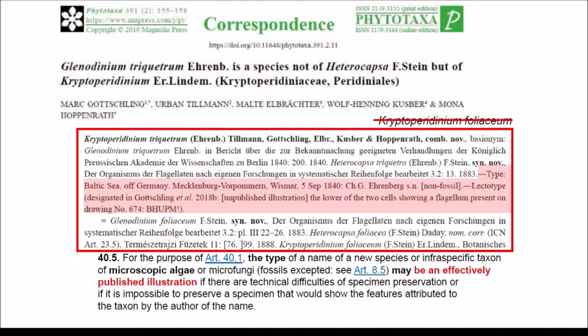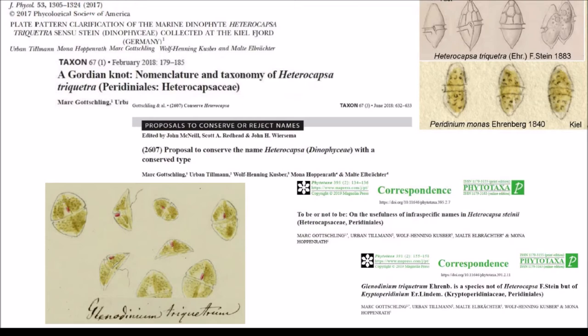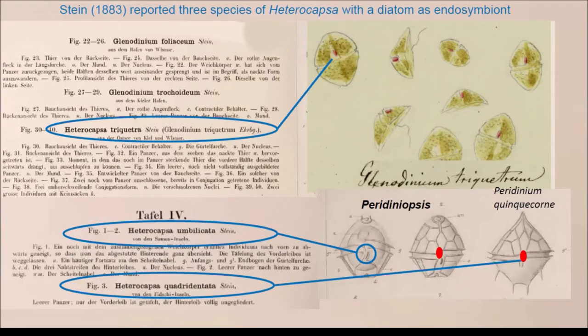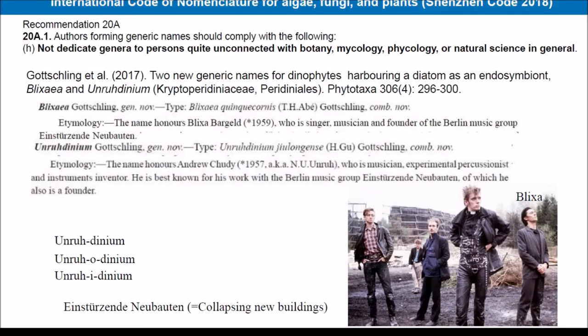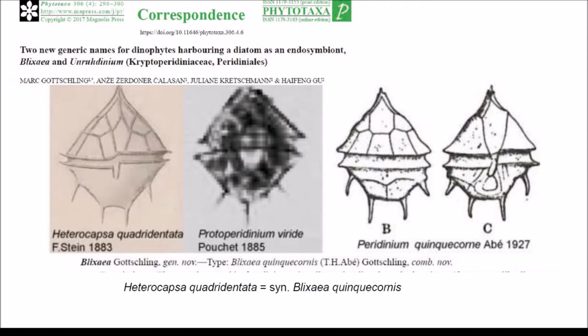This author continued publishing papers on the same topic. They transferred Glenodinium trichetum into the genus Tritoperidinium, based on a type that was an unpublished illustration by Ehrenberg. Finding the unpublished illustration of Glenodinium trichetum provided this author five papers. Stein described three species of Ethelokapsa, all with the same characteristics — they have an endosymbiotic title. This author proposed two new genera for these species, but in doing so did not follow the recommendation of the code, and they ignored the synonymy because the basionym of Frisaea was Peridinium kikikonel, which was already described as Ethelokapsa by Stein.